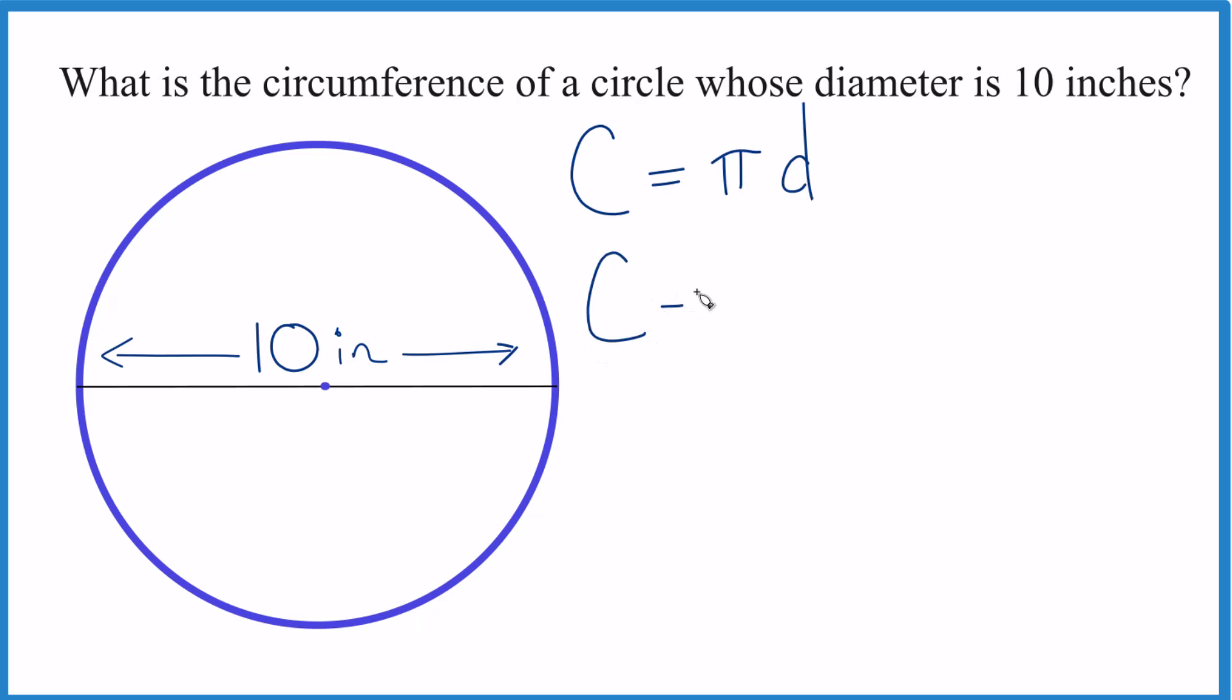So circumference equals pi, and d is 10, and we're going to keep the units in here, inches, 10 inches, which we could write as circumference equals 10 pi inches.